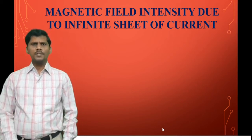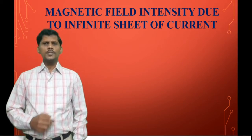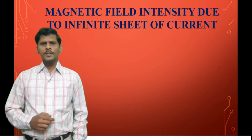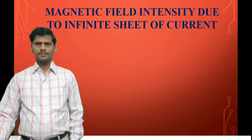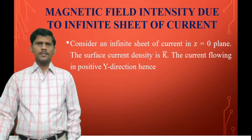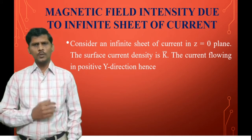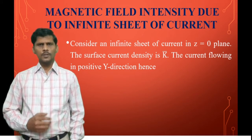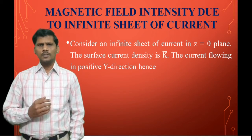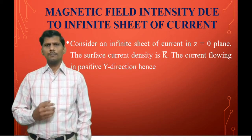The next application of Ampere's circuital law is magnetic field intensity due to an infinite sheet of current. Consider an infinite sheet of current placed in the z=0 plane. That surface carries a surface current density K̄.